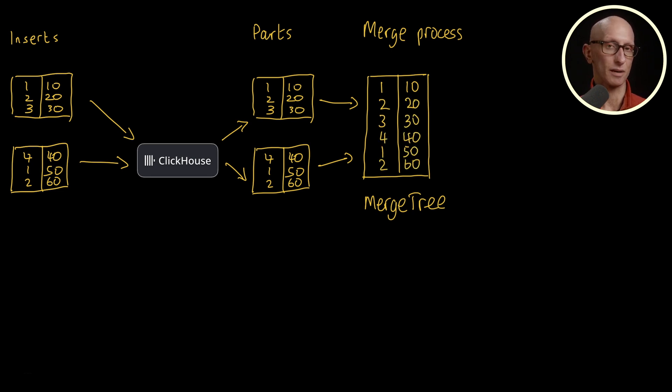But there are other table engines. One of these is the replacing MergeTree table engine where on each merge, it will take just the latest version per key. So in this example, the first versions of keys one and two go away.